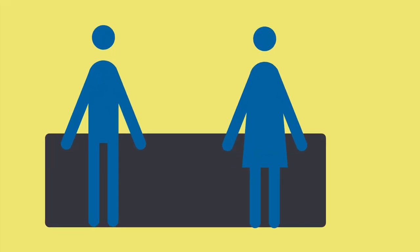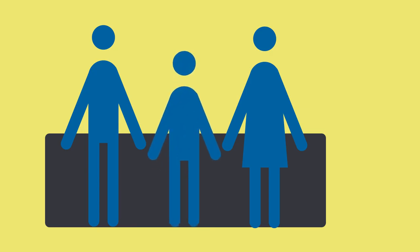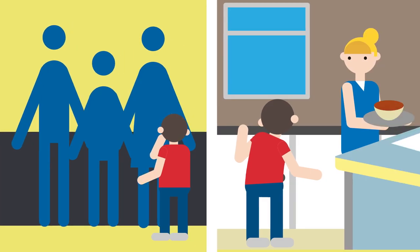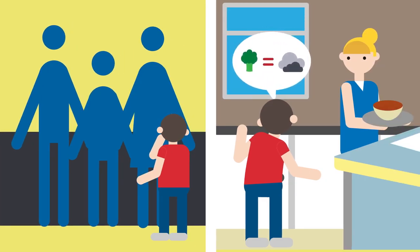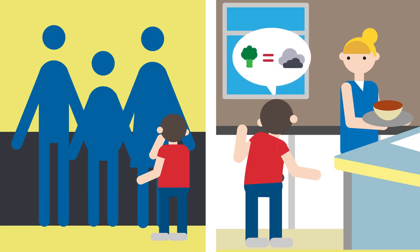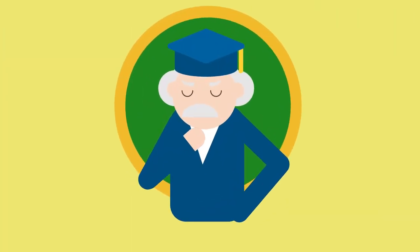Many characteristics are due to a combination of both genetics and the environment. For example, the height a person can grow to is determined by genetics — tall parents tend to produce tall children. However, a person will not grow to their potential height unless they eat a healthy balanced diet.